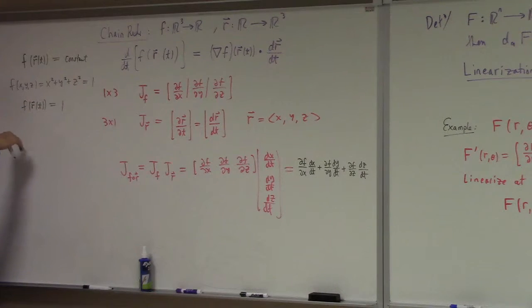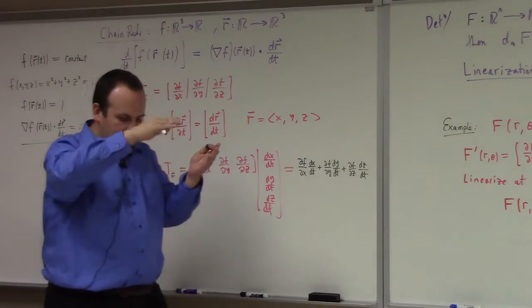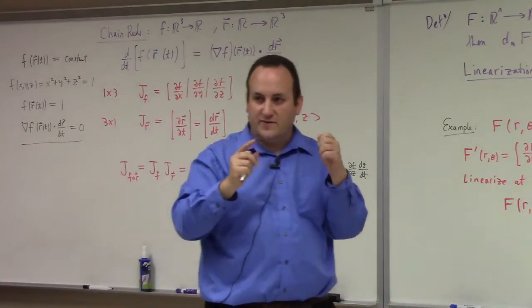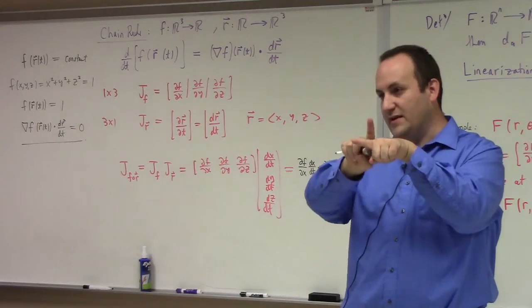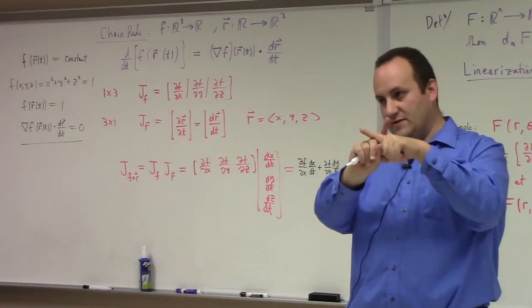And then this chain rule, what it's saying is that the gradient of F at the point R(T) dotted with R'(T) is equal to 0, which is to say that if you have a parametrization of a space curve which falls on some level surface, then the velocity vector for that space curve is perpendicular to the normal, to the surface.